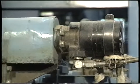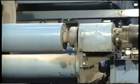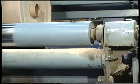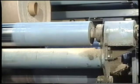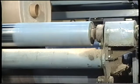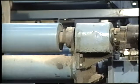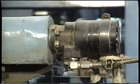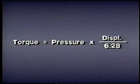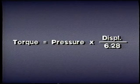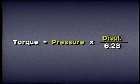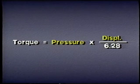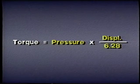A rotary actuator, like a motor, generates torque in the same way. If the displacement of the motor in a system is increased, the torque it can generate from any given pressure will also increase — larger motors generate more torque at the same pressure. To calculate the torque of a rotary actuator, we multiply the pressure in PSI times the displacement in cubic inches and divide by the constant 6.28.